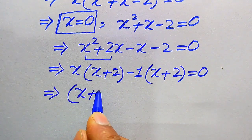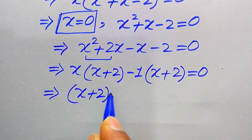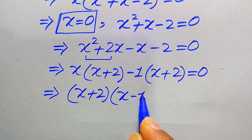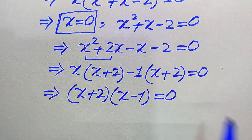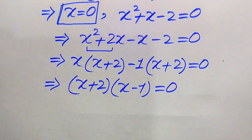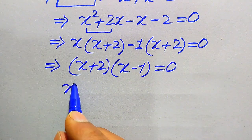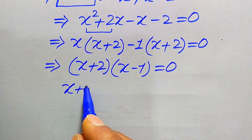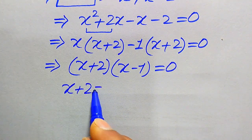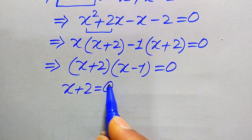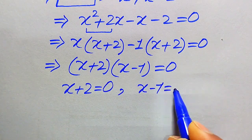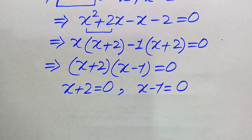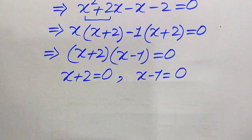Now we take x + 2 as common, and when we do that we get the remaining values as x − 1, and this whole equation equals 0. We then divide this into two cases: x + 2 = 0 and x − 1 = 0.